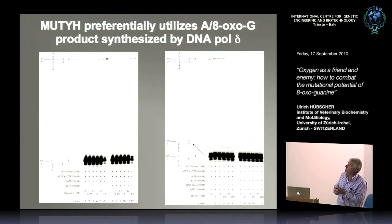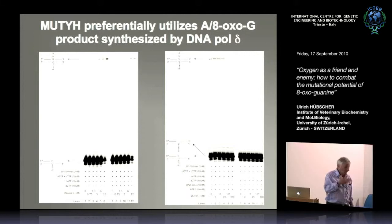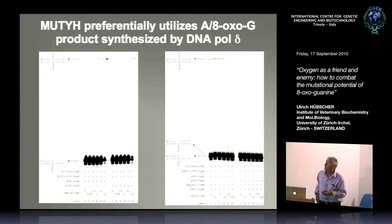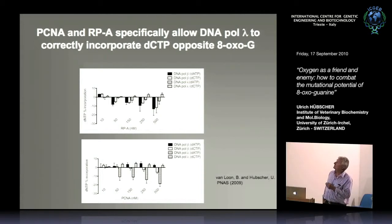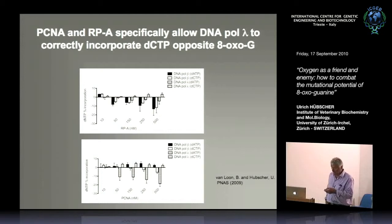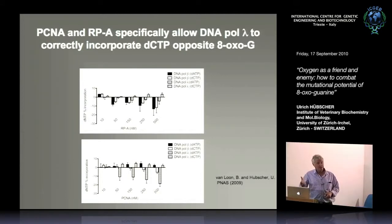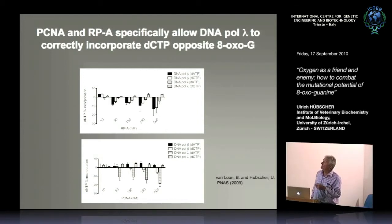Barbara then characterized each step. PCNA and RPA specifically allow pol lambda to correctly incorporate dCTP, showing again that in this reconstituted system pol lambda preferentially incorporates C over pol beta.